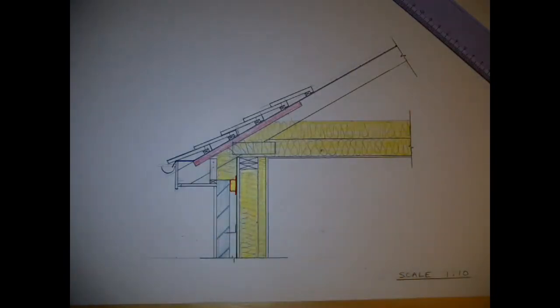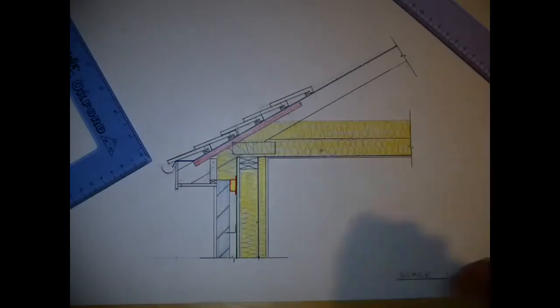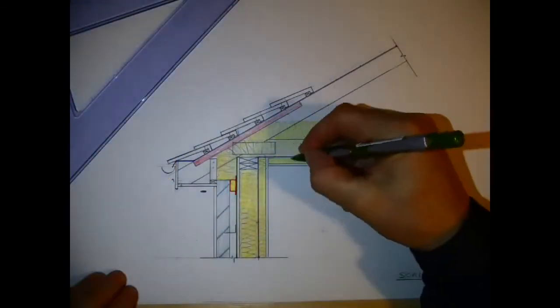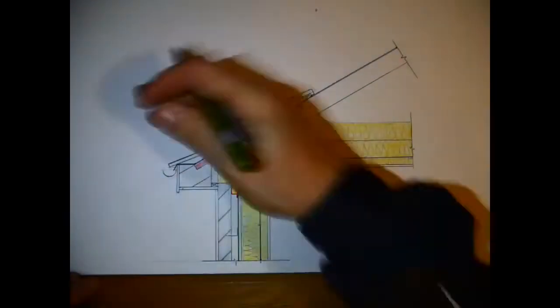You can see I put in the X's and I've used the lines parallel to the rafter in order to make sure all the battens are the same size, and using the two set squares to ensure that all my tiles are lying nicely on top of each other.